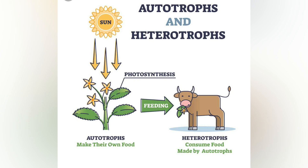Heterotrophs may be subdivided according to their energy source. If the heterotroph uses chemical energy, it is a chemo-heterotroph. If it uses light for energy, then it is a photo-heterotroph.